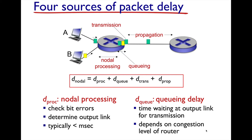When we left off, we talked about the four sources of packet delay. These four sources of delay are due to processing time — that is, the examination of the header information of the packet by the router. As a packet switch, the router looks at the destination address, consults its forwarding table, and makes a forwarding decision. Only then is the packet transmitted out some outgoing link one bit at a time. That processing delay is one source of delay that every single packet incurs.